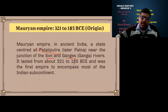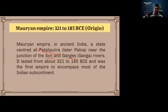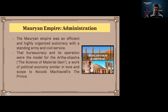This dynasty emerged onto the world stage because it contributed a great deal to India as a whole. It was the first dynasty in Indian history to rule over almost the entire Indian subcontinent. In terms of administration, the Maurya Empire was an efficient and highly organized autocracy with a standing army and civil services, which contributed greatly to the dynasty.